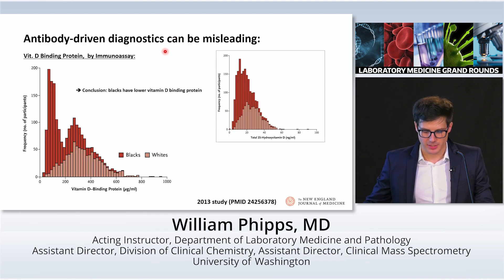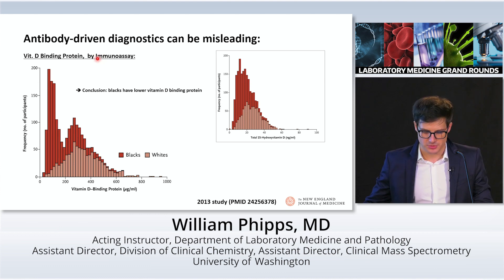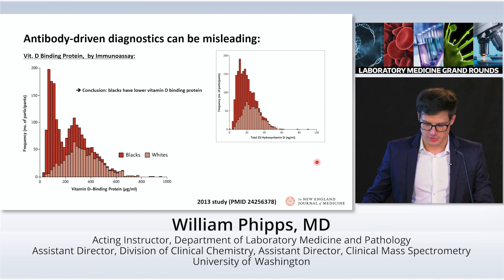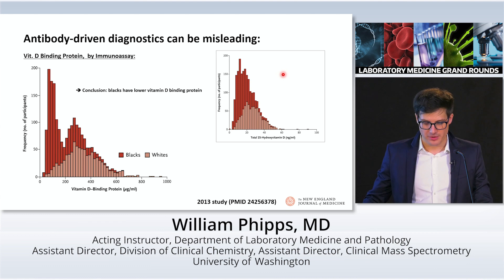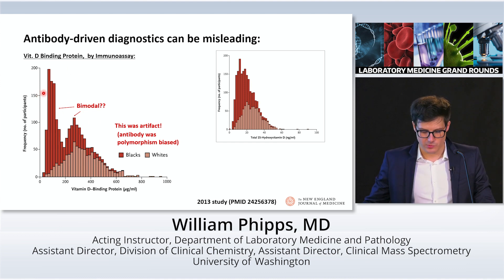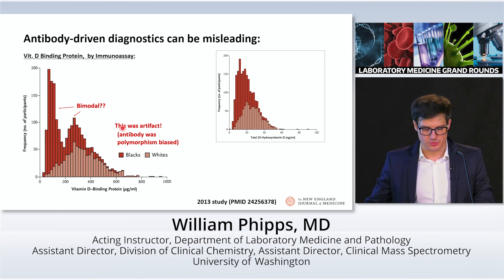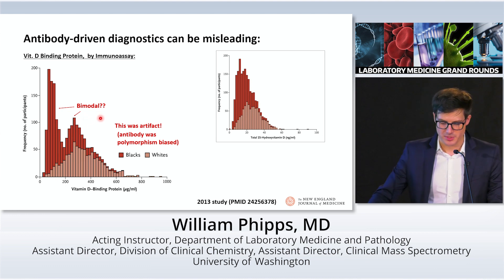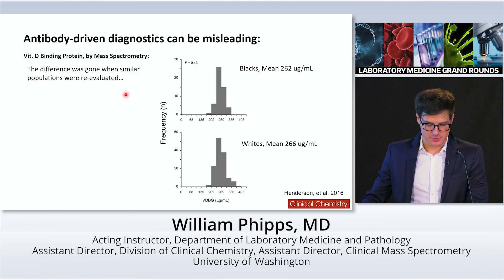Our exposure to this in the chemistry division primarily comes from our examination of circulating protein markers, and many of the same lessons apply in solid tissues. In one prominent example — an article from 2013 published in the New England Journal of Medicine — it argued that Black individuals overall have lower amounts of vitamin D binding protein compared to whites, offered as a potential explanation for apparent differences in vitamin D levels between races. As it turned out, this bimodal distribution was actually an artifact: the antibody used was polymorphism-biased, giving an unequal response to different underlying forms of vitamin D binding protein. When reanalyzed using mass spectrometry in a similar set of populations, these differences largely go away.